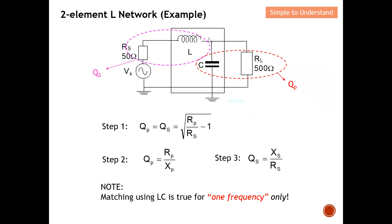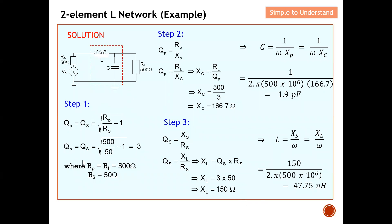The selected configuration has a series arm and a parallel (shunt) arm. Step one is to calculate Q using the equation: Q = √(RL/RS − 1), which with the higher resistor 500 Ω divided by the smaller 50 Ω gives Q = 3. Note that LC matching is only valid at a single frequency — in this case, matched only at 500 MHz.